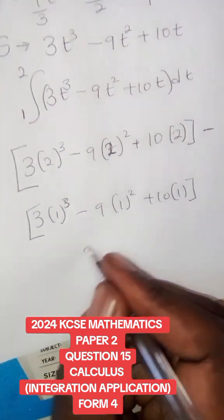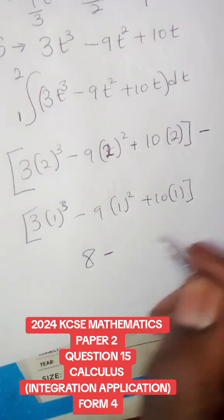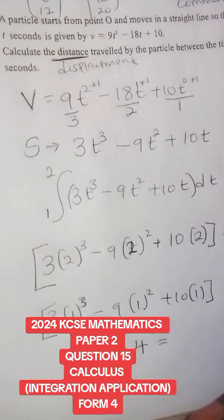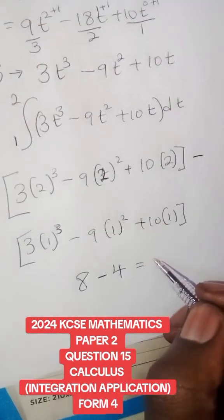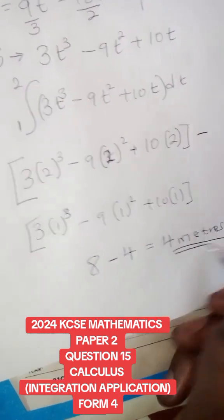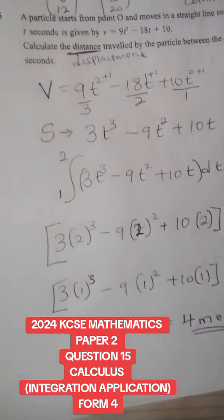For the first part we get 8, and for the second part we get 4, which gives my answer. Remember, displacement is the same as distance, so the distance is 4 meters. That is how the question is done under calculus.